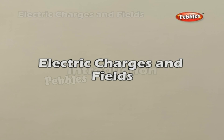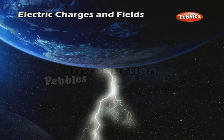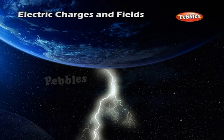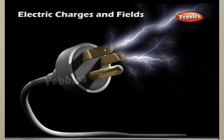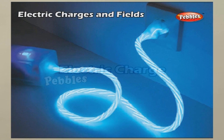Electric Charges and Fields. A common example of electric discharge is the lightning we see in the sky during thunderstorms. The reason for these experiences is the discharge of electric charges through our body, which are accumulated due to rubbing of insulating surfaces. Electrostatics deals with the study of forces, fields, and potentials arising from static charges.